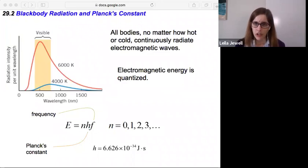What this says is that all bodies are continuously radiating electromagnetic waves. So you and I are giving off electromagnetic waves or light, and this is something that you can observe. If you're wandering around in the dark you can't see people, but you can put on your night vision goggles.